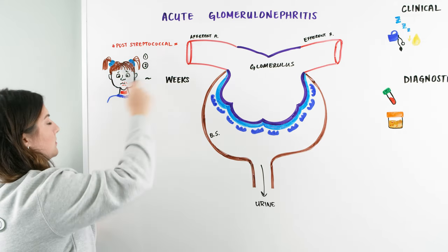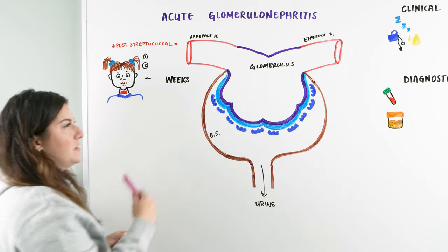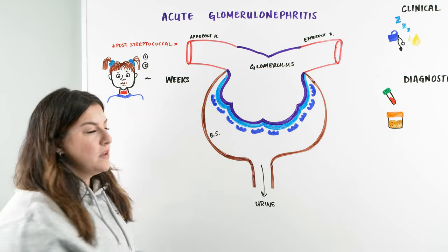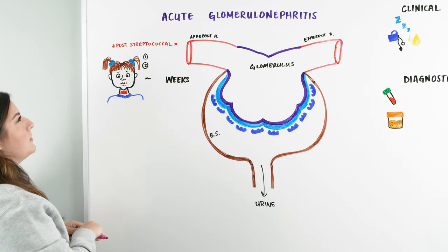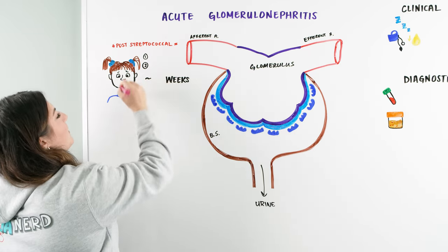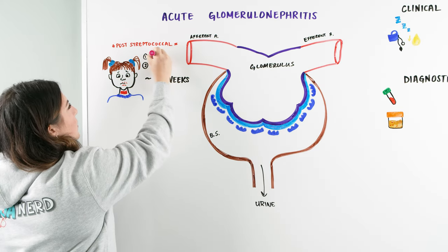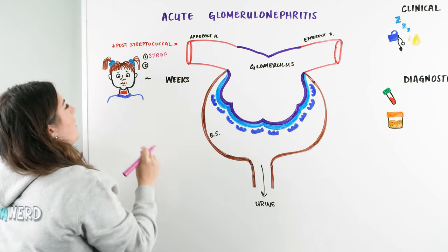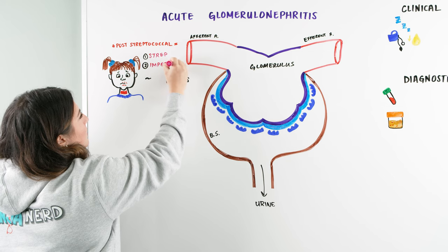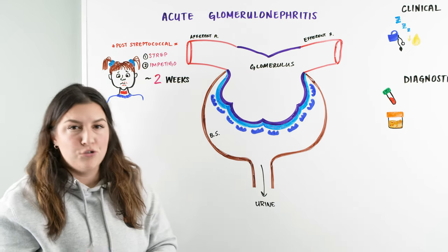Let's look at this diagram of a pediatric patient. We have this issue with post-streptococcal or a streptococcus infection. A patient could have had two different types of streptococcal infections — they could have had strep throat, or they could have had impetigo, and approximately two weeks after when it's been untreated, they may come in.